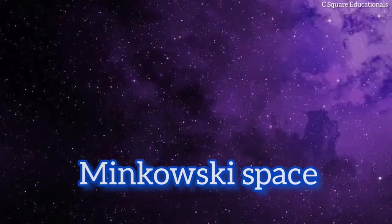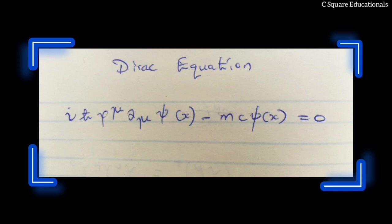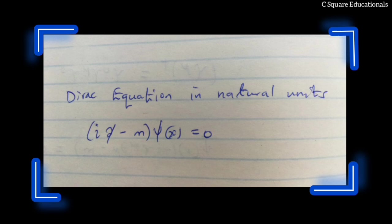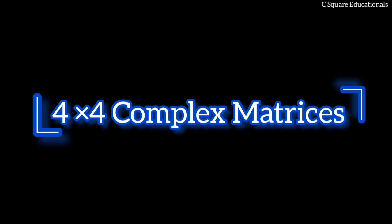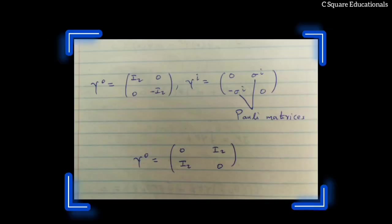In terms of the field psi on R13 to C4, the Dirac equation is written in natural units with Feynman slash notation. The gamma matrices are a set of 4x4 complex matrices which satisfy the defining anti-commutation relations. These matrices can be realized explicitly under a choice of representation. Two common choices are the Dirac representation, where sigma i are the Pauli matrices, and the chiral representation.